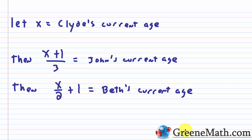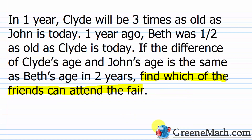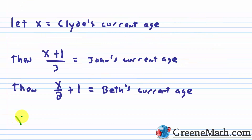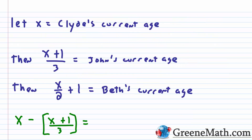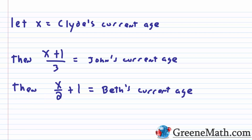In this problem we're not given a sum of ages, so we use another condition to form our equation: the difference of Clyde's age and John's age equals Beth's age in two years. Clyde's age minus John's age: x − [(x + 1)/3]. Beth's age in two years is (x/2 + 1) + 2 = x/2 + 3. Setting these equal: x − [(x + 1)/3] = x/2 + 3.